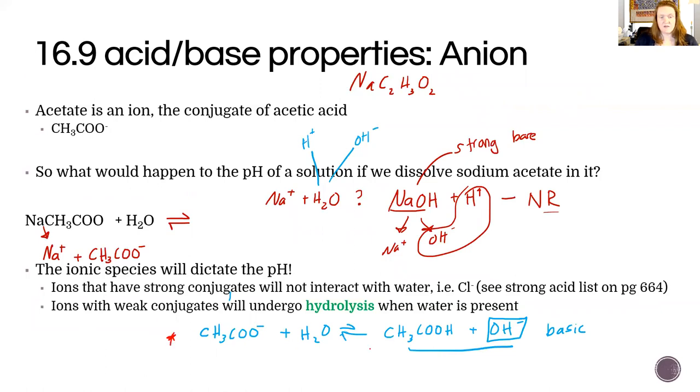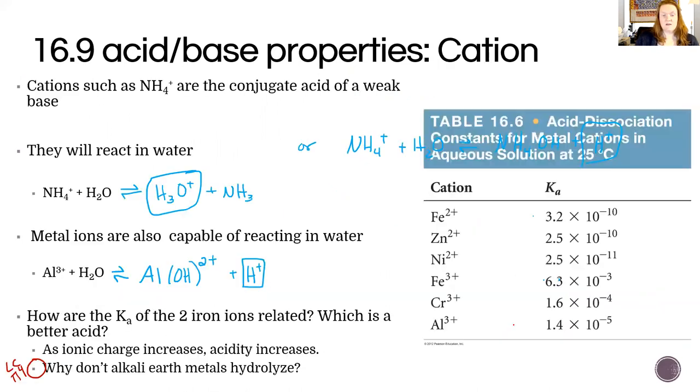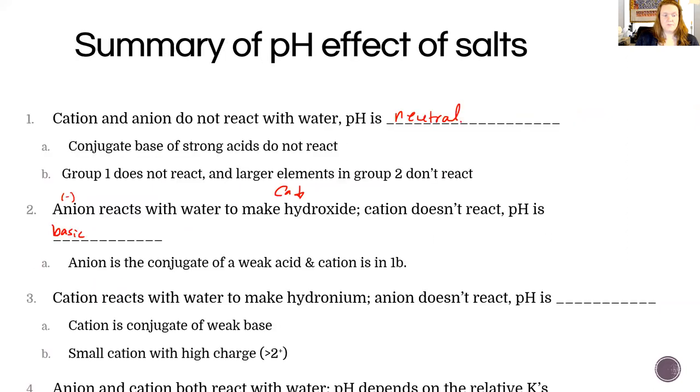If the cation does react with water, it takes the OH- because it's positive, so it takes the OH- and leaves H+ or hydronium behind. That would mean the pH is going to be acidic because you're making hydronium.